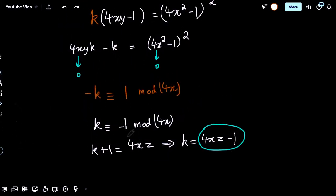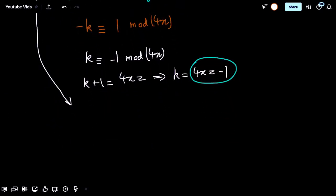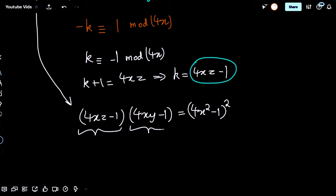Let's substitute this value of k that we've just obtained into this equation. That would now give us 4xz minus 1 times 4xy minus 1 equals 4x squared minus 1 whole squared. This means both 4xz minus 1 and 4xy minus 1 are good pairs. And hence, xz and xy are both good pairs.